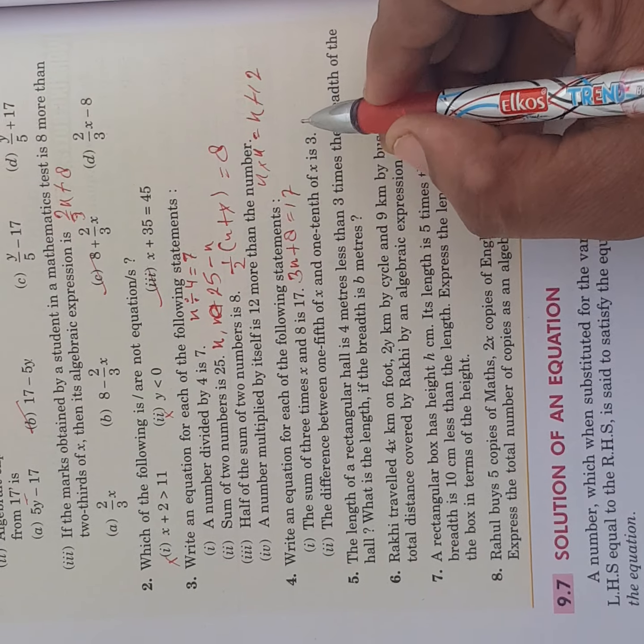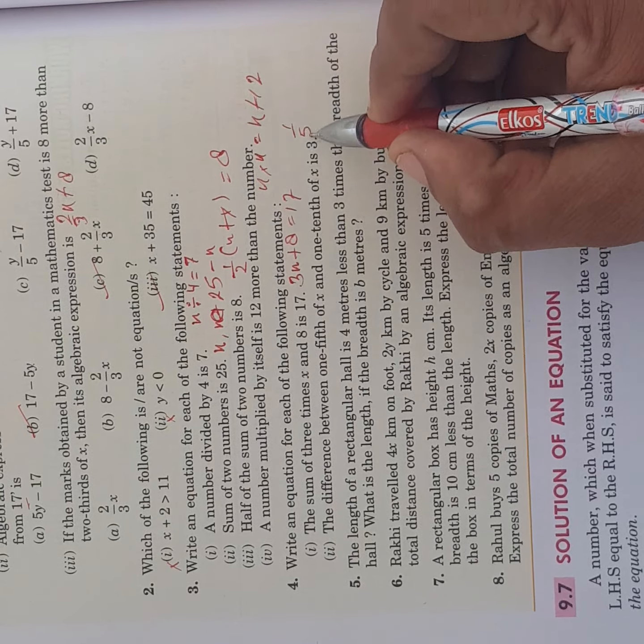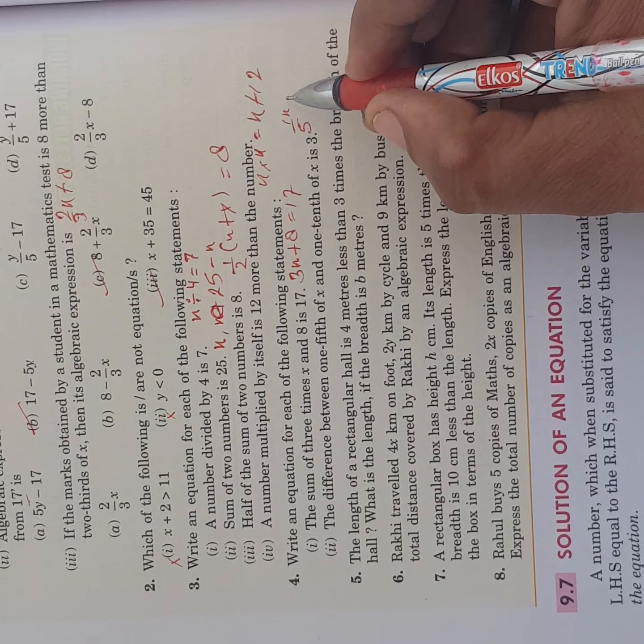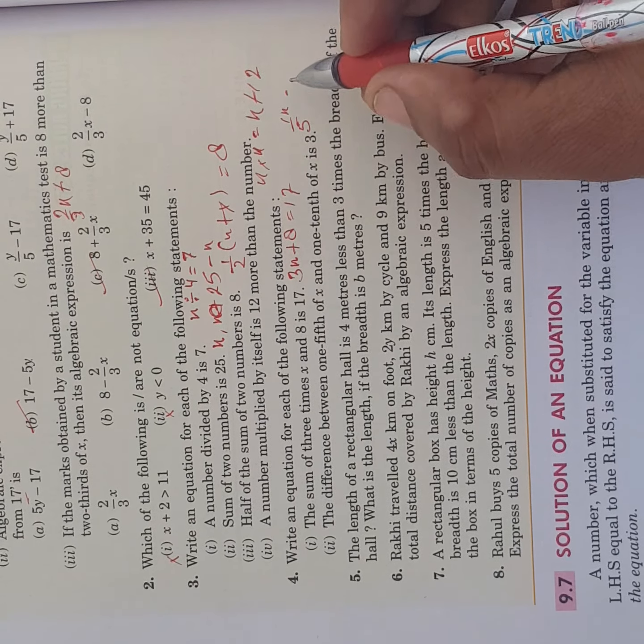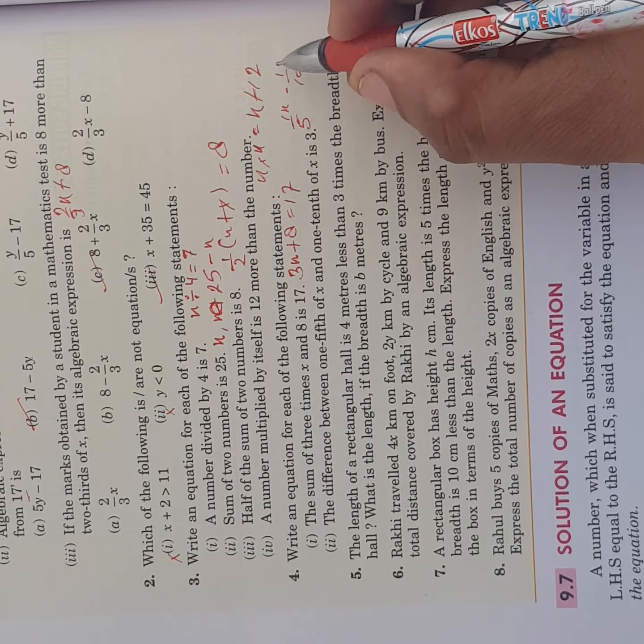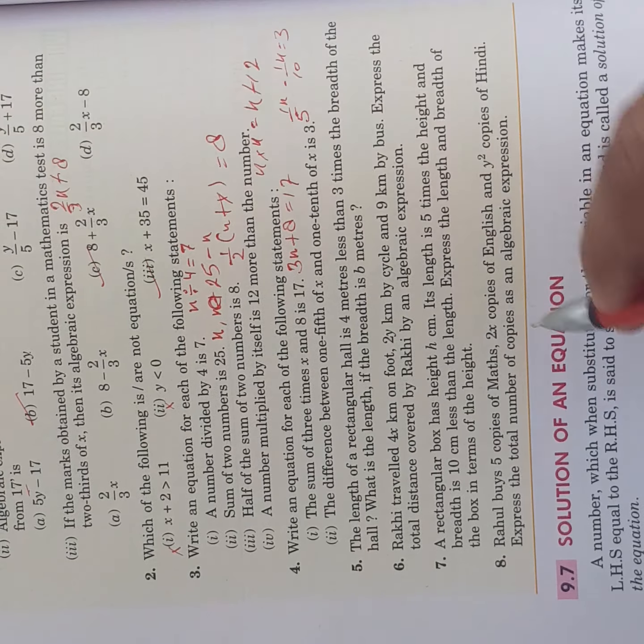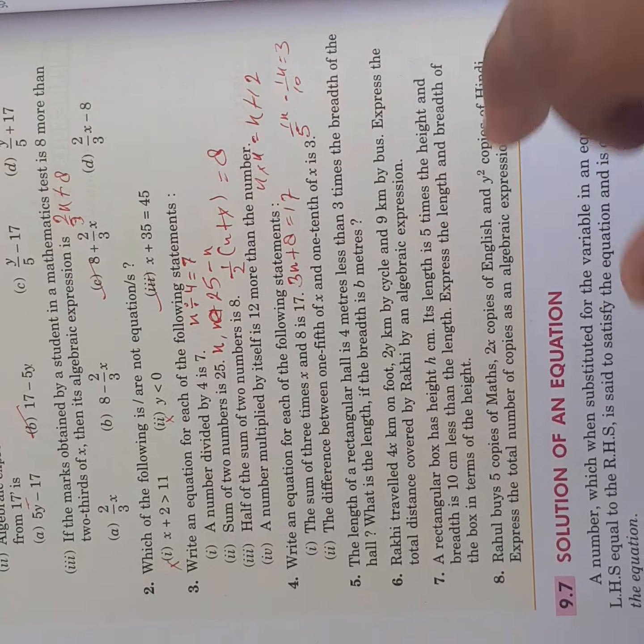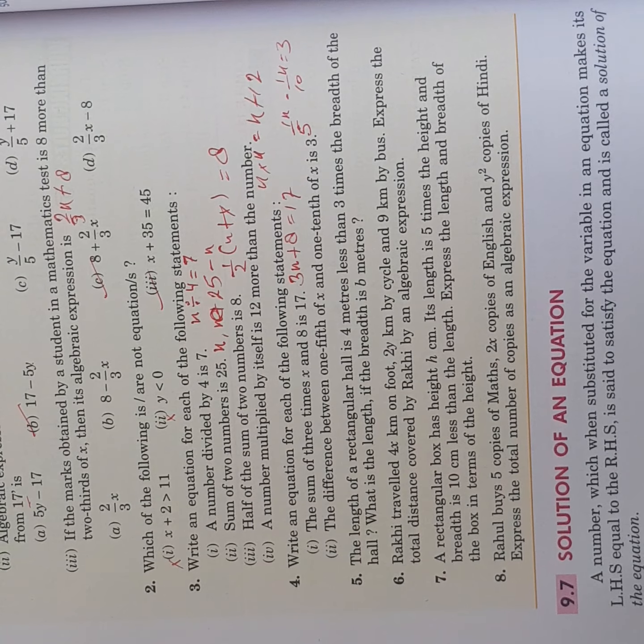The difference between 1 fifth of x and 1 tenth of x is 3. Difference between 1 fifth, so 1 upon 5 of x, means multiply with x, and 1 tenth of x, 1 upon 10 x. The difference is 3. This is it. Thank you very much, may you complete the rest of the questions yourself. Thank you very much.